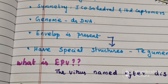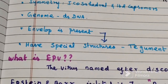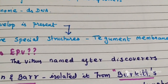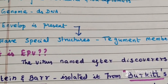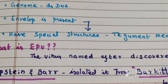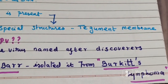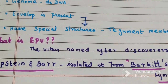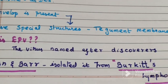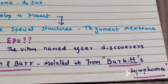What is Epstein-Barr virus? This virus is named after its discoverers, Epstein and Barr, who isolated it from Burkitt's Lymphoma. So the virus is named after the scientists who discovered it.